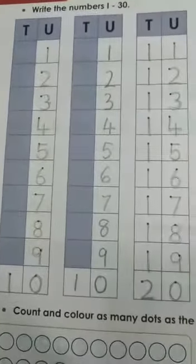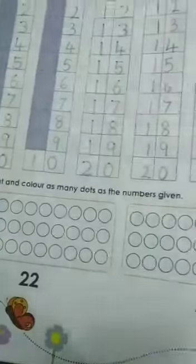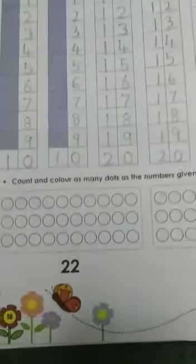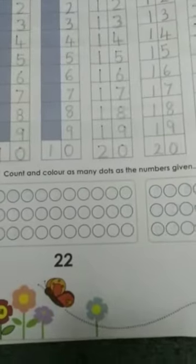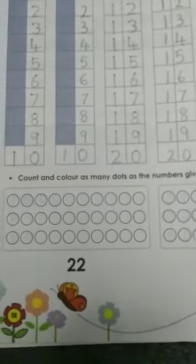Now here, so you have traced 1 to 30 and wrote 1 to 30, okay? Now next activity, what is it? Count and color as many dots as the numbers given. So here, 22 is the number given. So you have to color 22 dots.